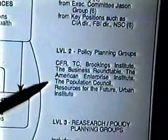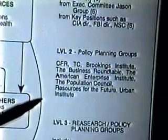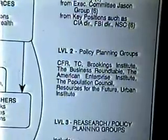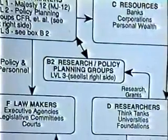They pass decisions on to policy planning groups: the Council on Foreign Relations, the Trilateral Commission, the Brookings Institute, the Business Roundtable, the American Enterprise Institute, the Population Council, Resources for the Future, and the Urban Institute. Those in turn pass decisions down to research policy planning groups such as the RAND Corporation, the Stanford Research Institute, and the Hudson Institute.